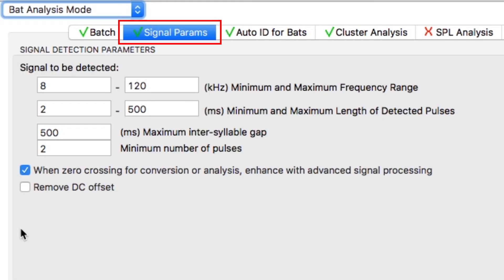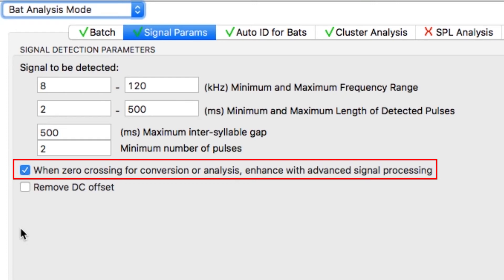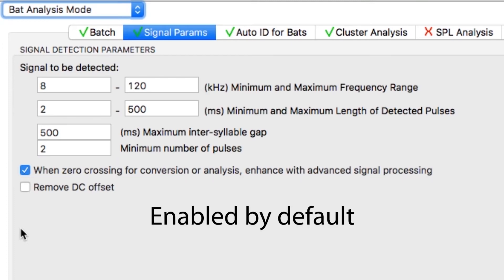Under the signal params tab is a checkbox which is labeled when zero crossing for conversion or analysis enhance with advanced signal processing. This box is checked by default, but of course you can disable the function if you like.